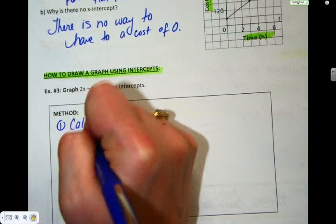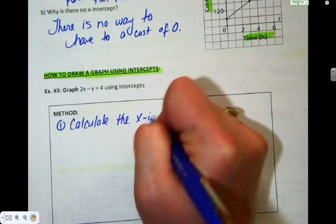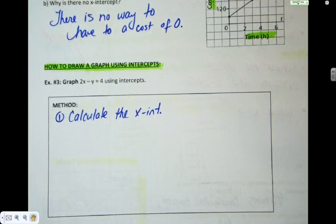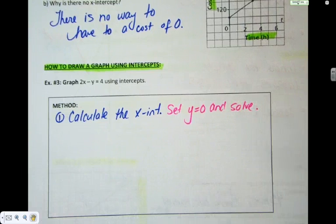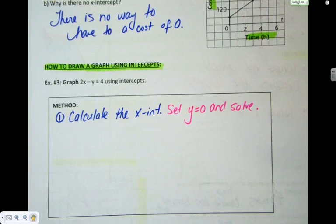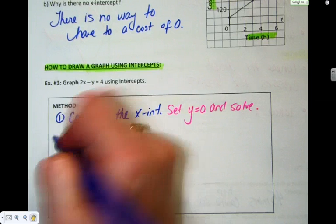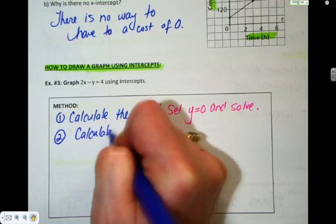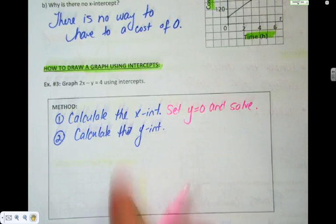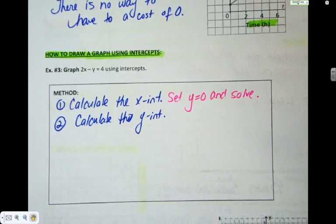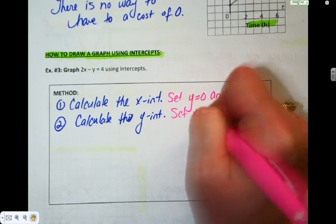All we want to do is to be able to draw that graph. Method number one: Calculate the x-intercept. How? Well, what do you know about y at the x-intercept? Zero. So set y equal to zero and solve. What do you think step two might be? Calculate the y-intercept. How? Set x equal to zero and solve.